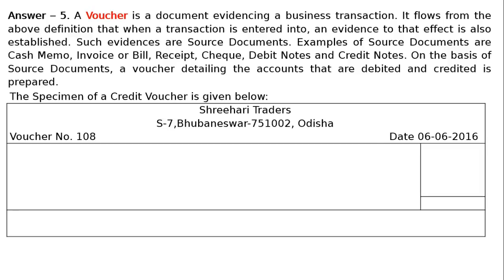There is a left and right side. Next is the amount column with the Rupee symbol. This is a credit voucher — it is cash account, and 7000 is the amount.